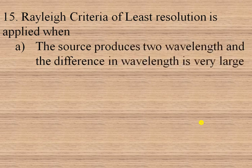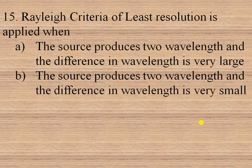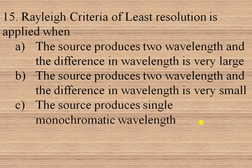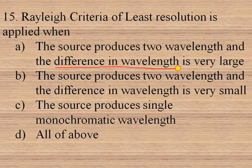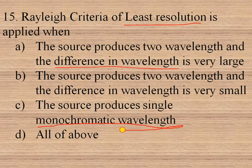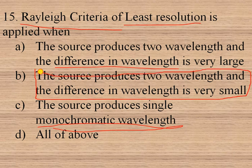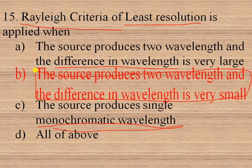The Rayleigh criterion of least resolution is applied when the source produces two spectral lines very close in wavelength and the difference in wavelength is very small. If there is a large distance between the wavelengths then these waves are easily resolved, so no need for the Rayleigh criterion. It is used when the source produces monochromatic light and the difference in wavelength is very small. So option B is the right option.